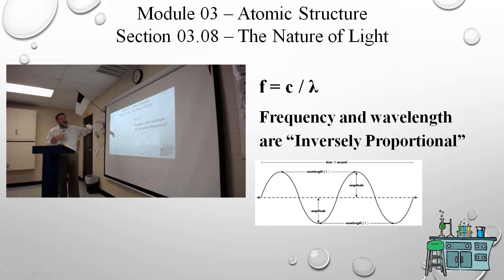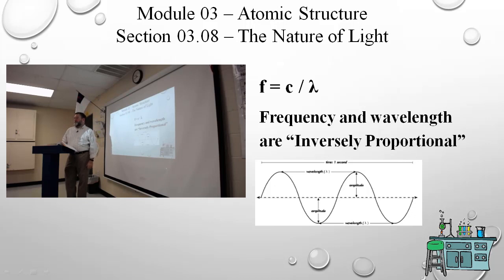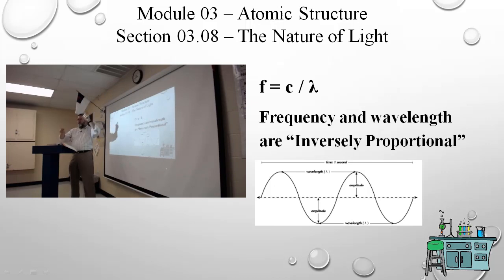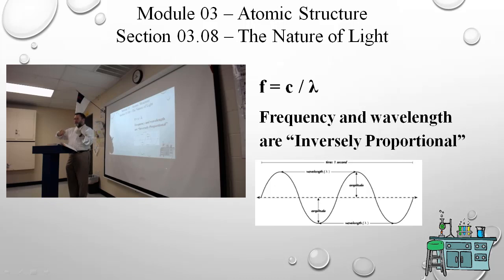If we rearrange to solve for wavelength: wavelength = c / f. Frequency and wavelength just change places — if f equals c over lambda, then lambda equals c over f. It sets up the same relationship: if frequency goes up, the denominator goes up, so wavelength goes down. They're inversely proportional — when one goes up the other goes down, always moving in opposite directions between frequency and wavelength.